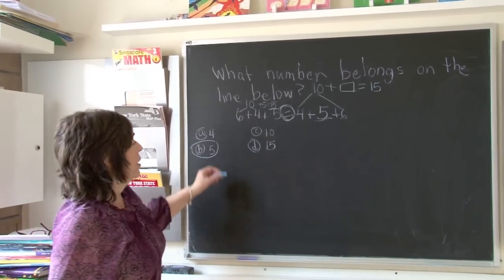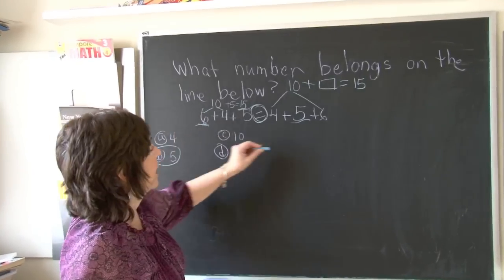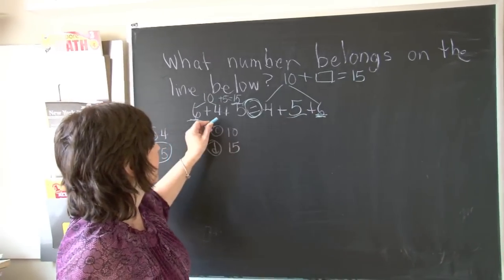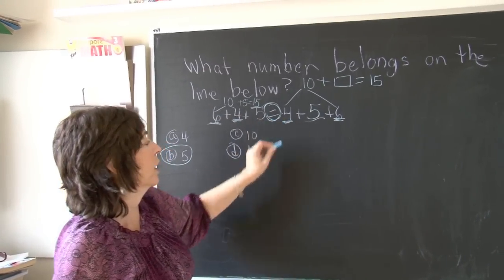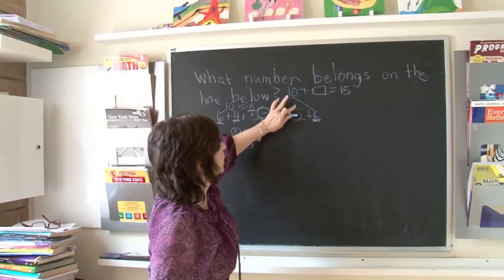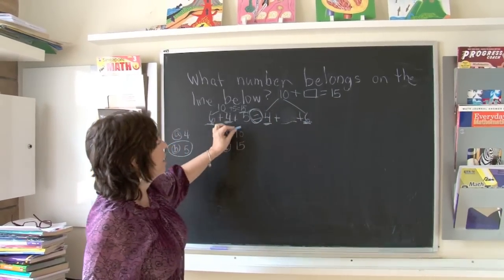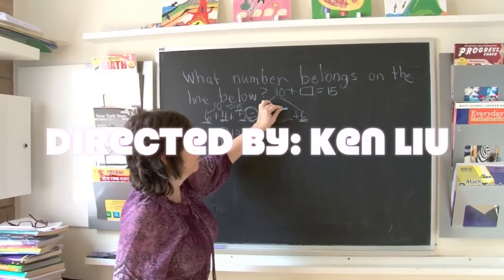So this had a 6 in it, this had a 6. This had a 4, this side of the equation, this side had a 4. So what number was originally missing from here? 5 was missing, because when we add numbers the order does not matter.